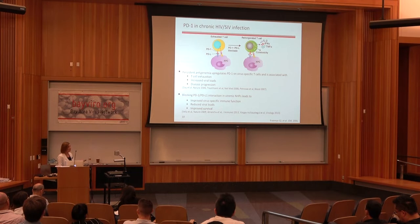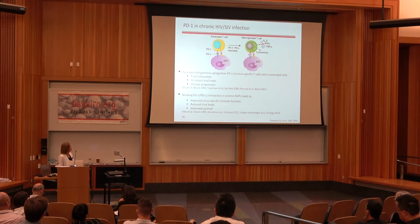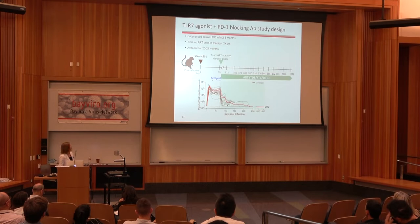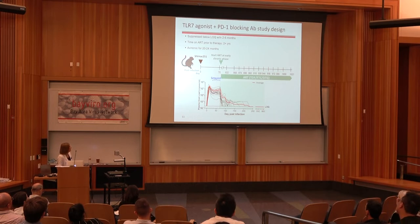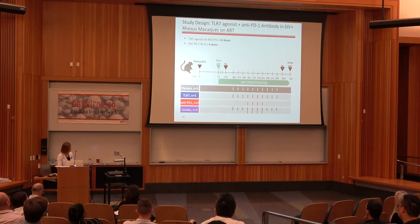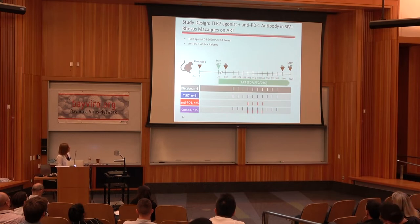Our goal is to administer therapy in the background of ART because that's the patient population we're interested in treating, so we wanted to test whether blocking PD-1 receptor may be efficacious in our model. We again took Indian rhesus macaques, infected them with SIV-MAC251, and in this case allowed the infection to progress until early chronic phase before putting them on ART therapy. We maintained these animals on ART for nearly two years before initiating treatment intervention, then split them into four groups of five and administered either TLR7 agonist GS9620, a PD-1 blocking antibody, or the combination of the two.